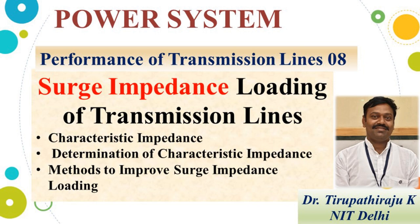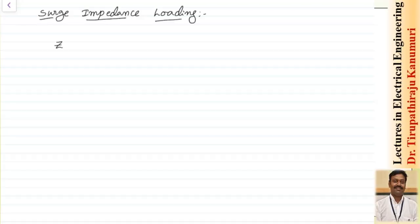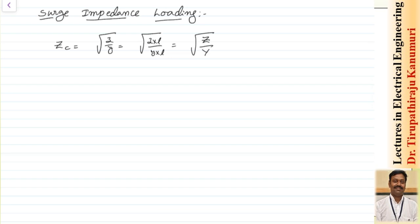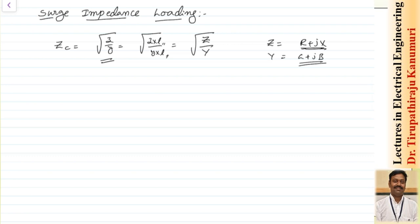Today we are going to discuss surge impedance loading of transmission lines. In the last class, we saw the characteristic impedance given by √(z/y). Multiplying numerator and denominator by L gives total impedance divided by total admittance. This characteristic impedance is independent of length, indicating the characteristic of your line — the ratio of z = r + jx to y = g + jb — which is why it is called the characteristic impedance.